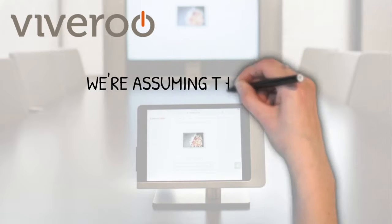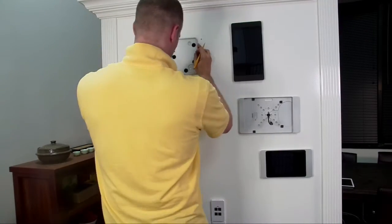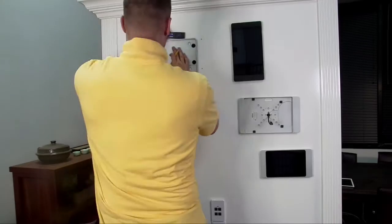We're assuming the home run cable is already in place, so let's go ahead and get started. Tyler's first step was to find the right placement for the mount and mark the holes where he needs to drill.